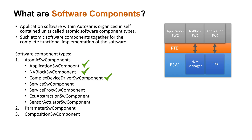For example, activating the airbag or fuel injector can be time critical. In such a case, if the message passed through the BSW layer is consuming additional delay, the CDD can be used to pass the information from application to microcontroller directly through RTE. Please note that RTE is not bypassed at any case and all information should flow through it even for time-critical applications.